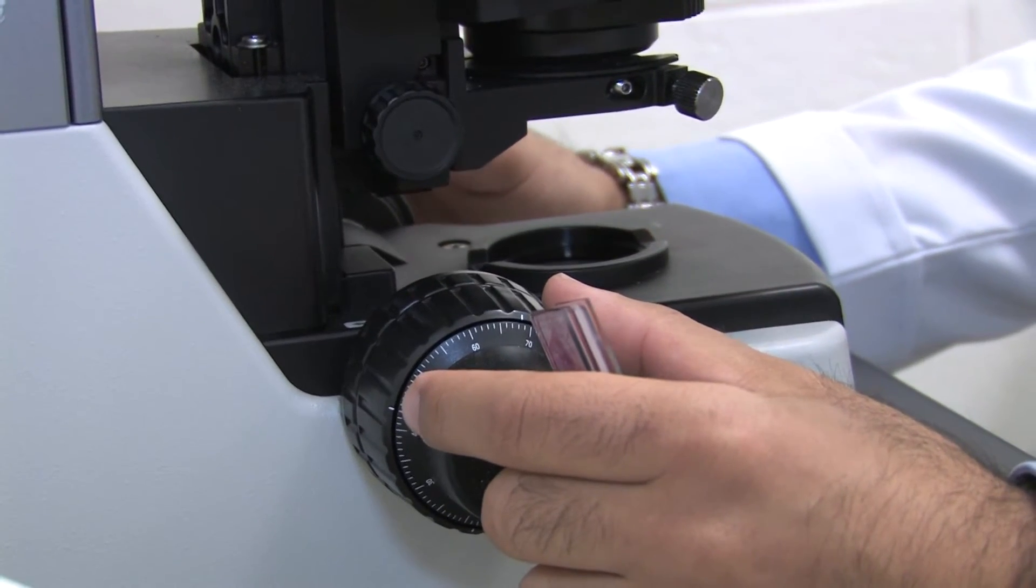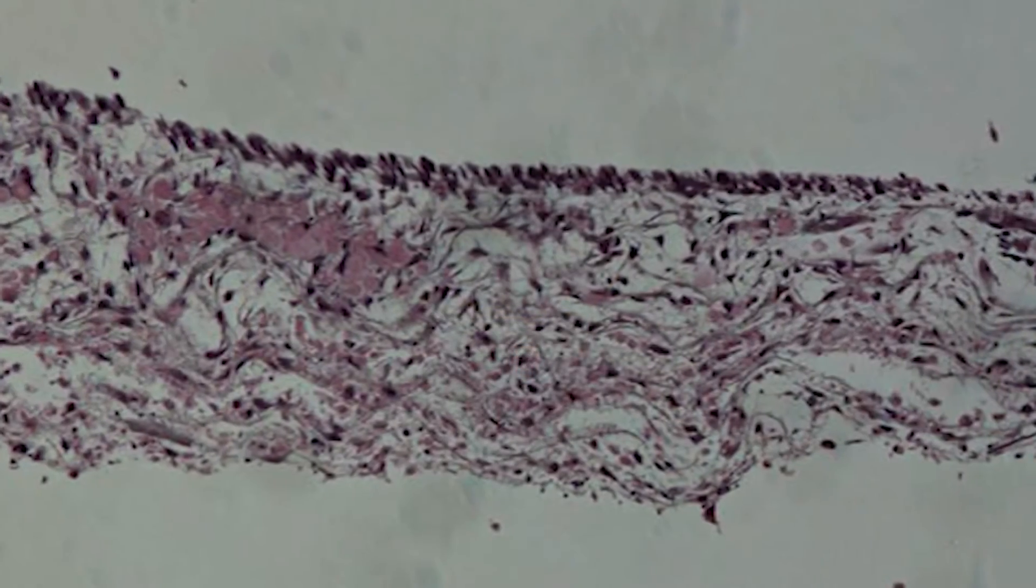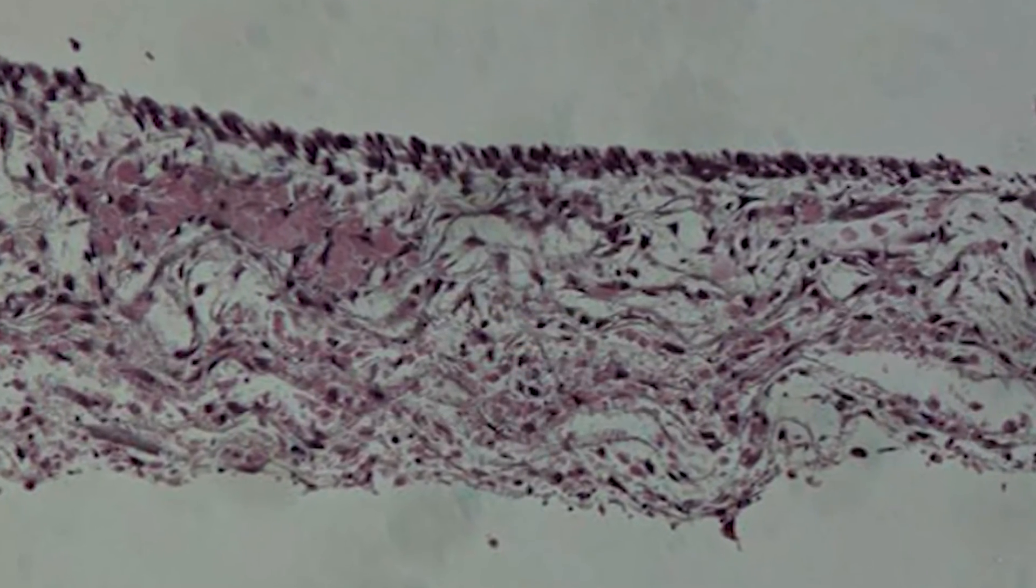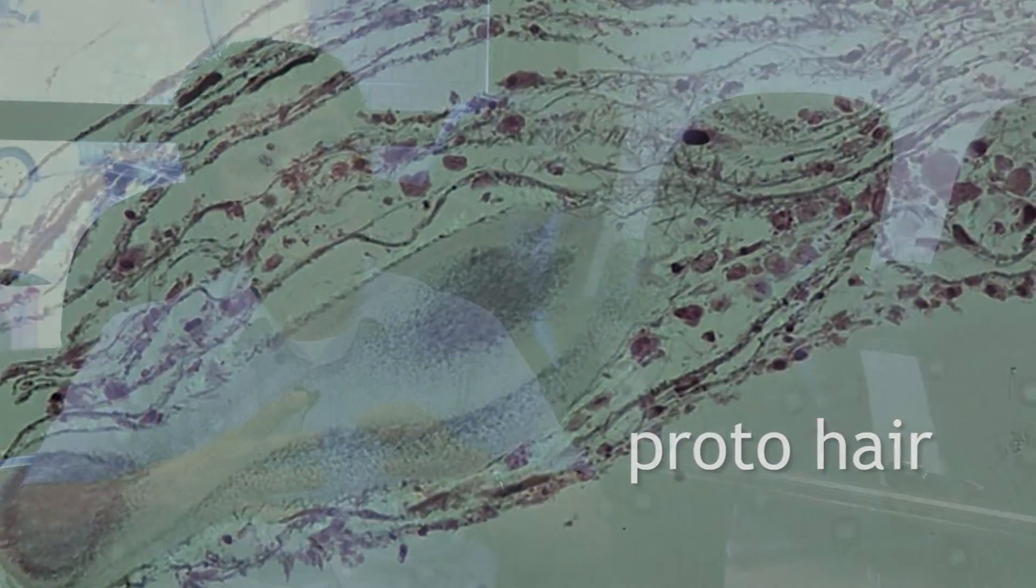Now the question is how can we control them in a better way—like density, distribution, the location. So all these things, if they can be achieved in the very near future, we can put them together and then we can make the hair skin grafts, the real skin grafts.